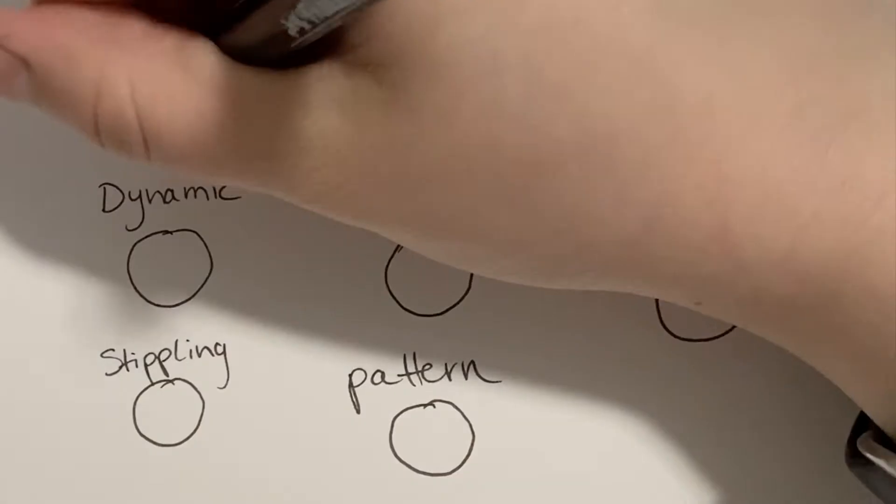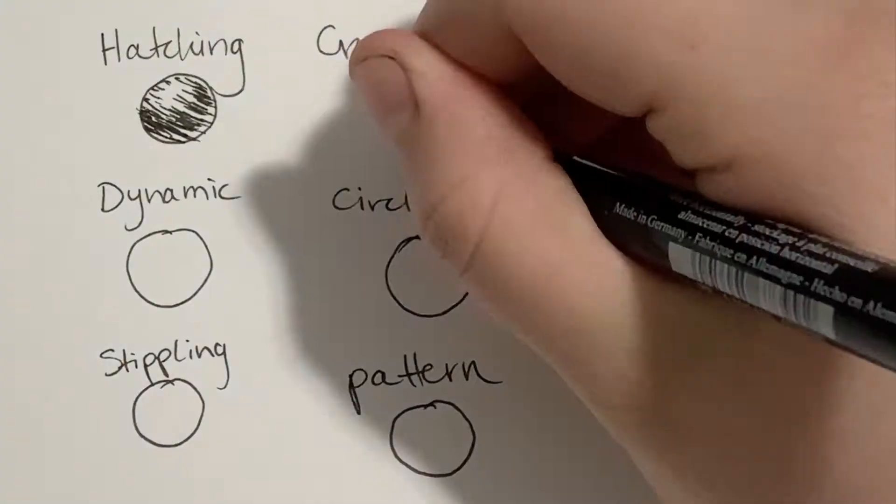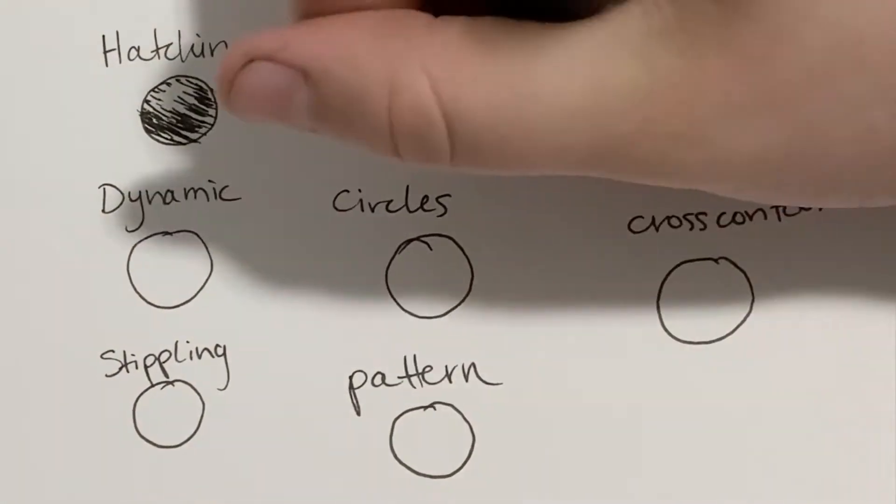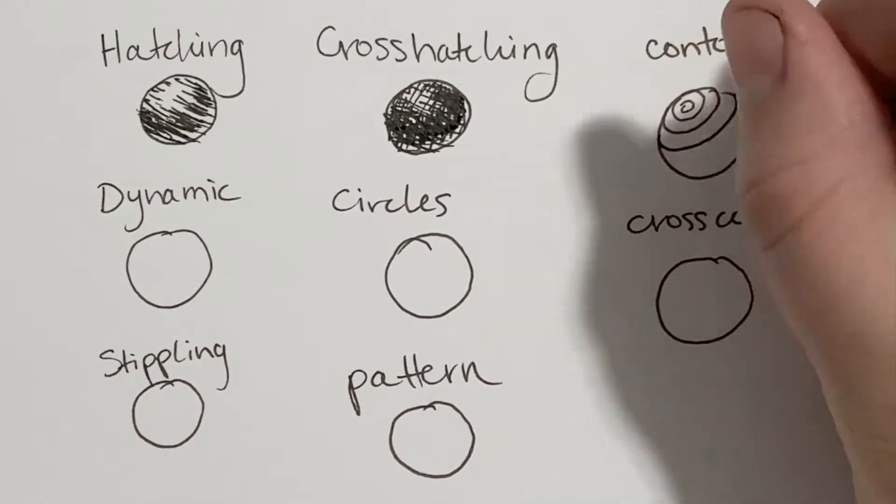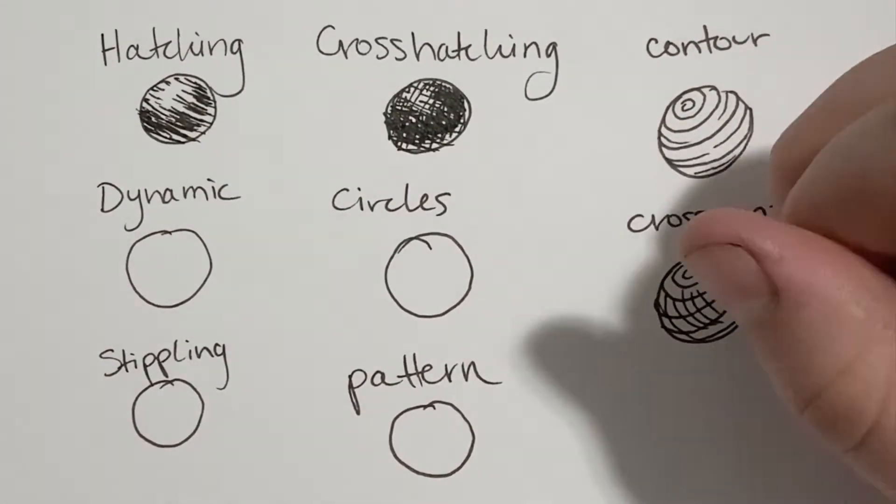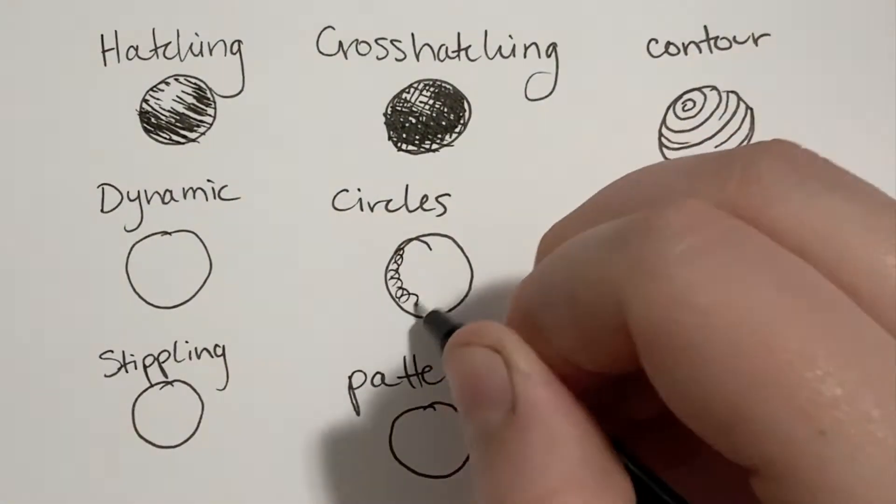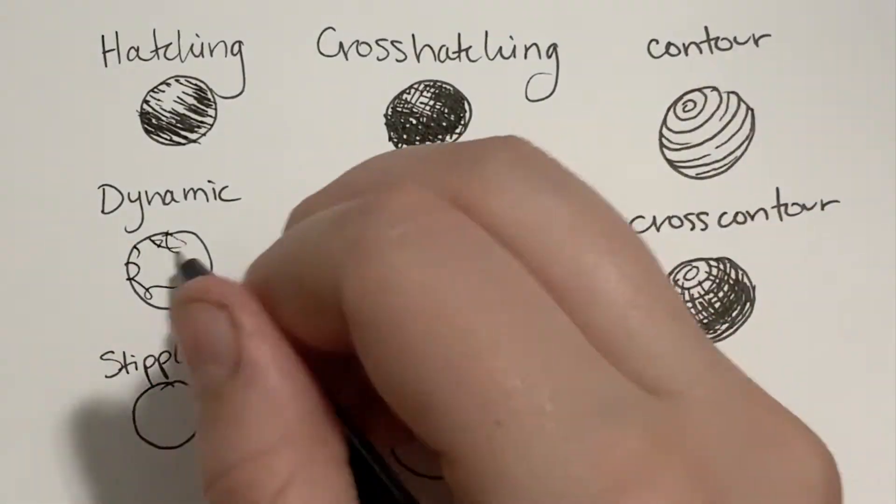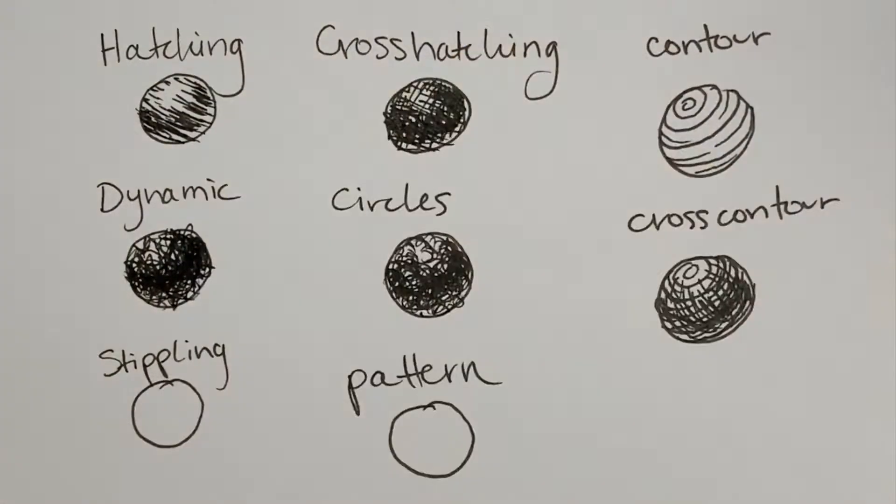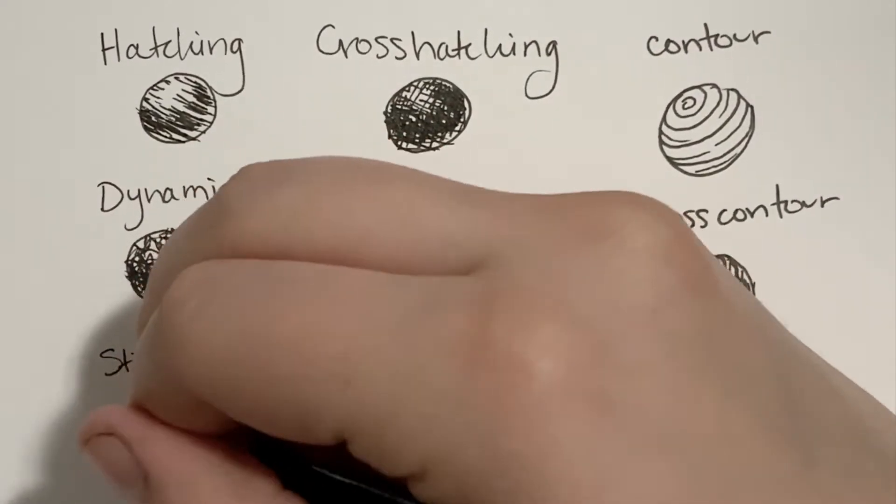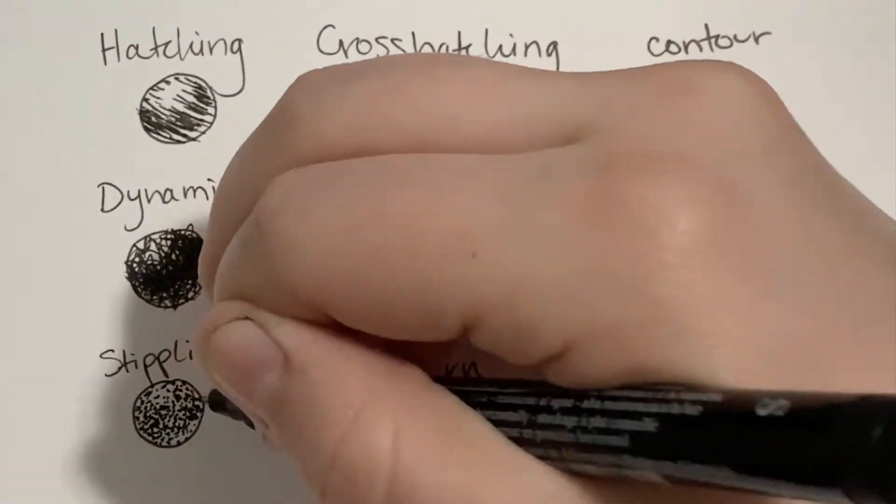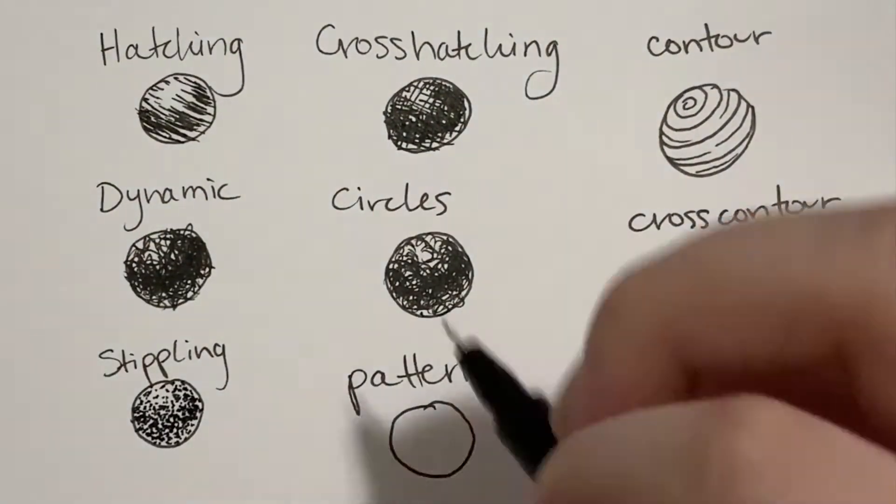Here I've done some very quick thumbnails of different kinds of line work that you can use to build value with a pen drawing. There are so many more and you can really get creative with it. For one drawing I built value with different words. There are infinite options for whatever you want to do that conceptually benefits your drawing.